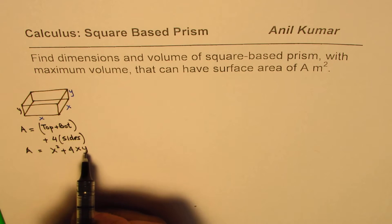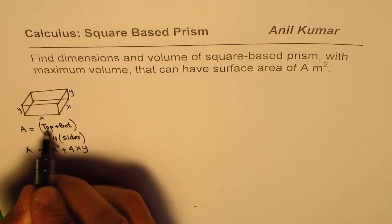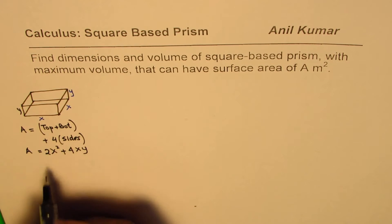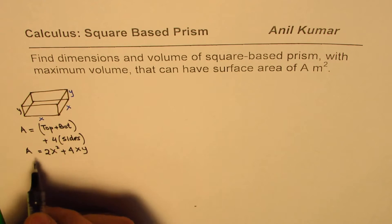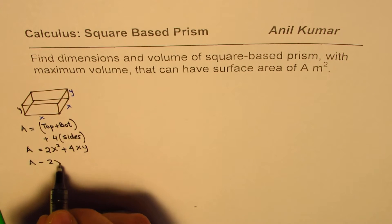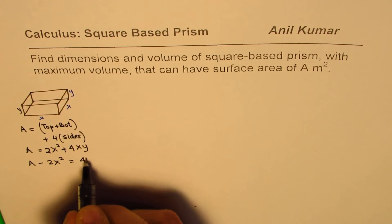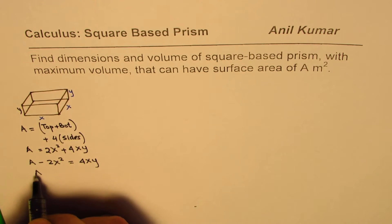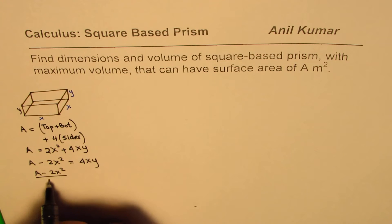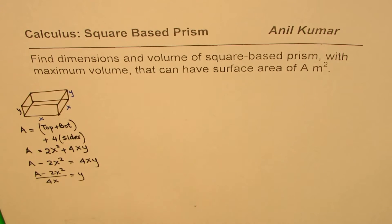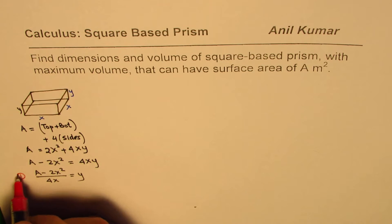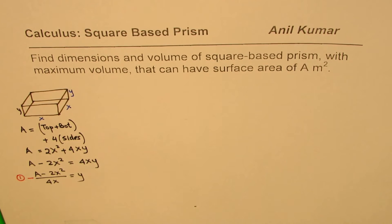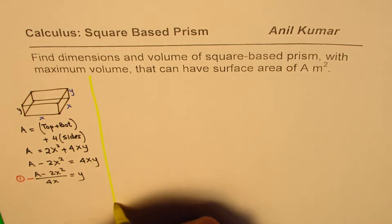Now I will isolate y. The surface area equation is 2x² + 4xy = A. Rearranging: 4xy = A − 2x², so y = (A − 2x²) / (4x). This is equation one, which is a relation between the dimensions — length, width, and height — of the square-based prism.